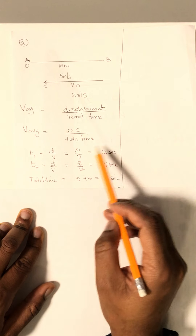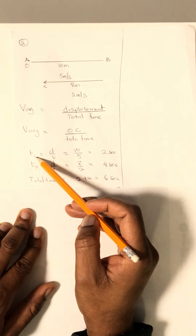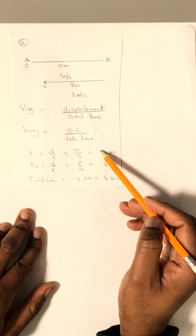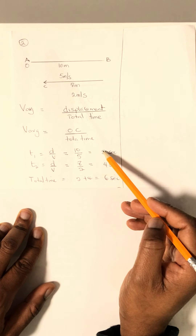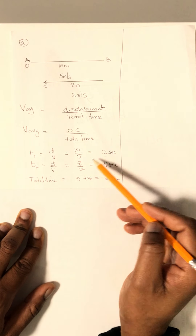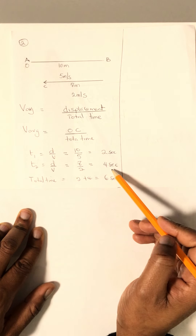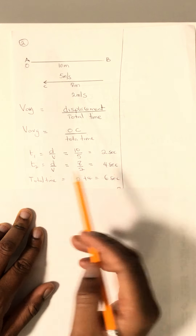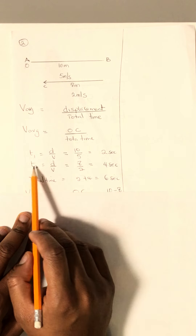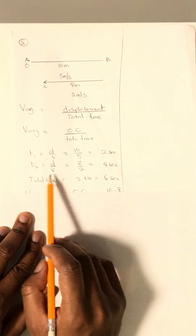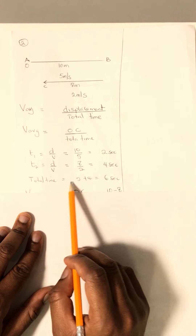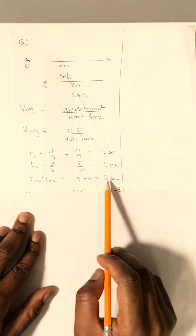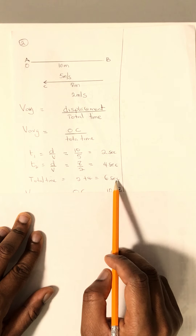Therefore, the time taken for the first journey equals 2 seconds, and the time taken for the second journey backward equals 4 seconds. Therefore, the total time taken for the whole journey equals 2 plus 4, which gives us 6 seconds.